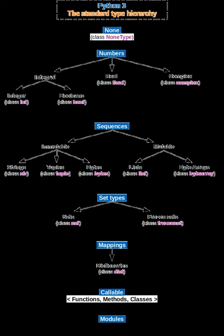This data type defines the operations that can be done on the data, the meaning of the data, and the way values of that type can be stored. A type of value from which an expression may take its value.